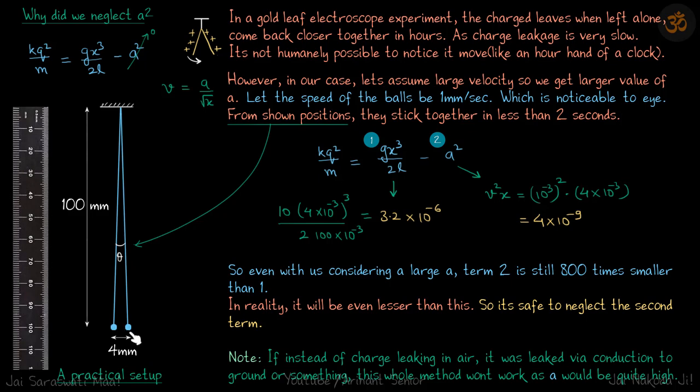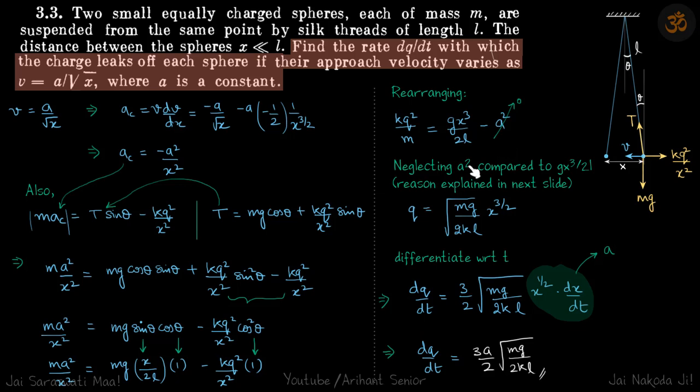When the charge leakage is very less, the velocity is also very less. And if velocity is less, A is very less. And if A is very less, we can safely neglect this term. And then just differentiate this and get our answer dq by dt.